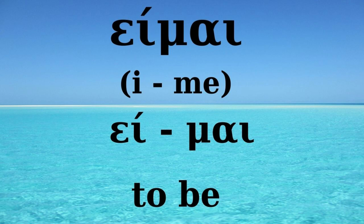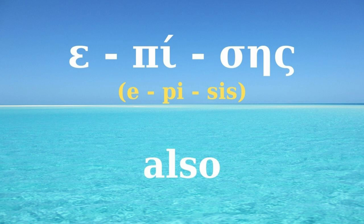IME — this verb means 'to be.' The 'I' is the diphthong epsilon-yota and it is a separate syllable. 'ME' is a syllable that consists of a consonant together with a diphthong. EPISIS means 'also.' E-PI-SIS — this word has three syllables. The first syllable, E, is the letter epsilon. The second is PI, consisting of one consonant with a vowel, and also the third. IME. EPISIS.